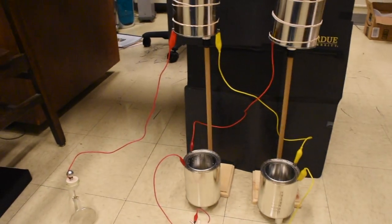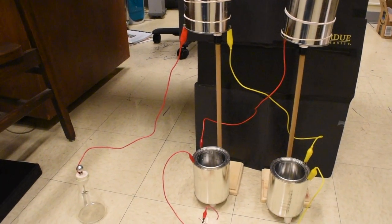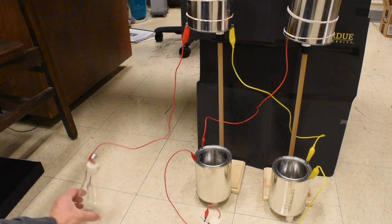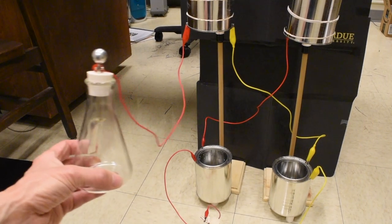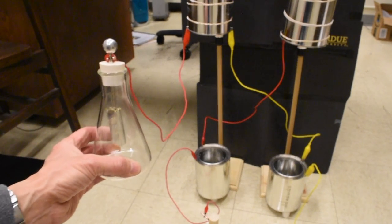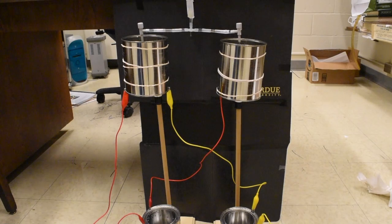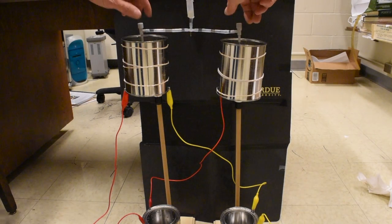I've also connected an electroscope to one of the terminals of the capacitor. In this case it's the upper left paint can that it's attached to. Let me start the water flowing.